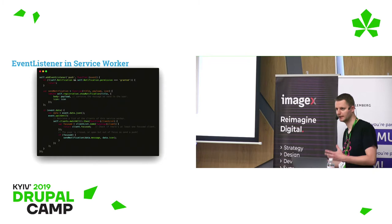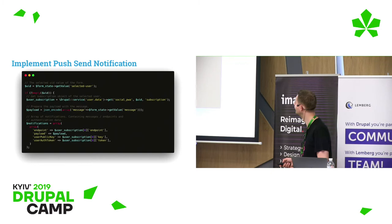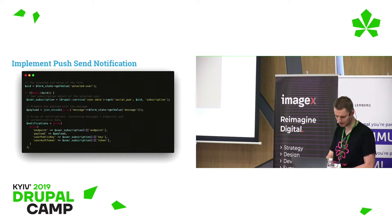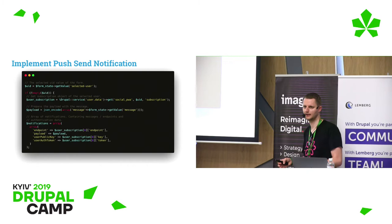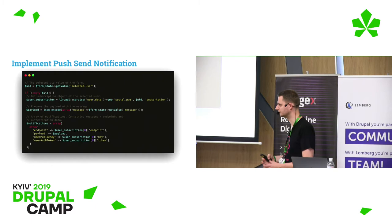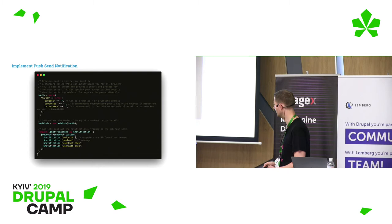The service worker listens for events from the push service and receives the payload to show to the user. To send push notifications, we use a library called Web Push in OpenSocial, which takes care of most of the complex logic. We have the endpoint stored from the user, we have the payload — normally text, maybe with an image attached — and the public key and token. At the bottom you can see we initiate the Web Push library and send it.